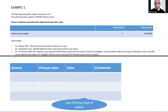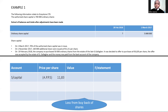I prefer to use a table that breaks everything down before recording anything. The first account affected is the share capital account, which always increases and decreases at cost price. Due to the buyback, the cost price is R11.83 — the average price per share. The value is 50,000 shares × R11.83 = R591,500, recorded in the ordinary share capital note in brackets because it reduces shares issued.